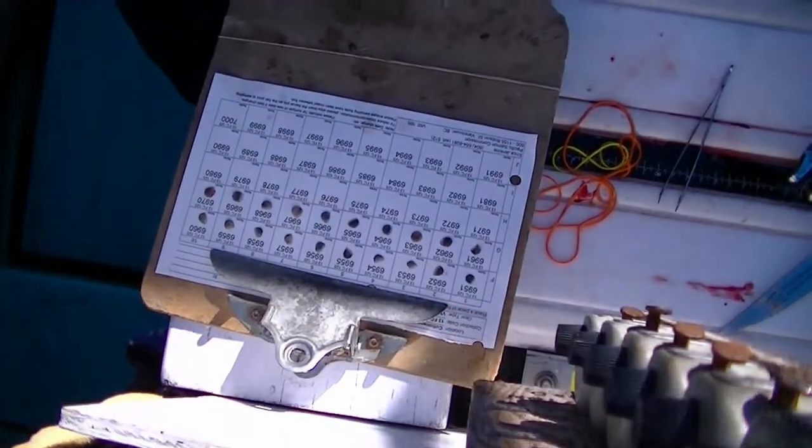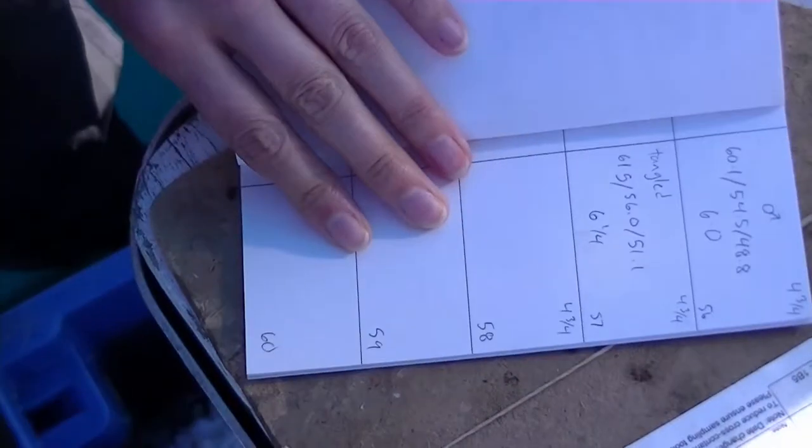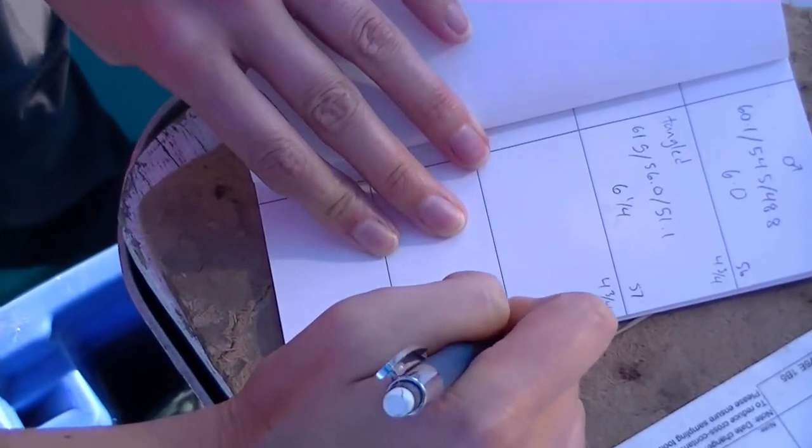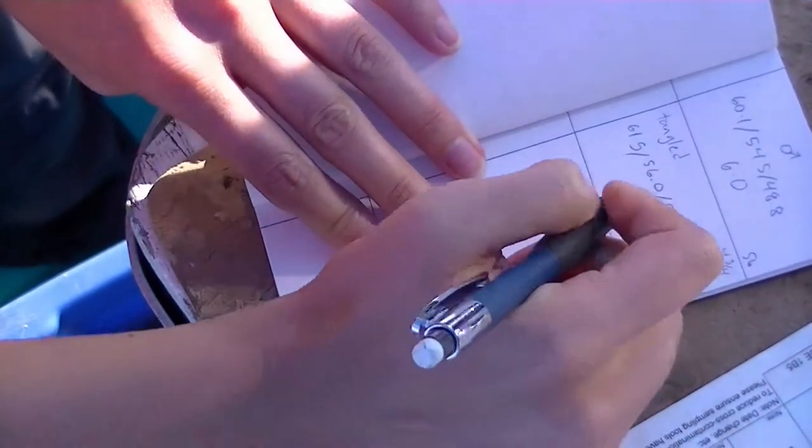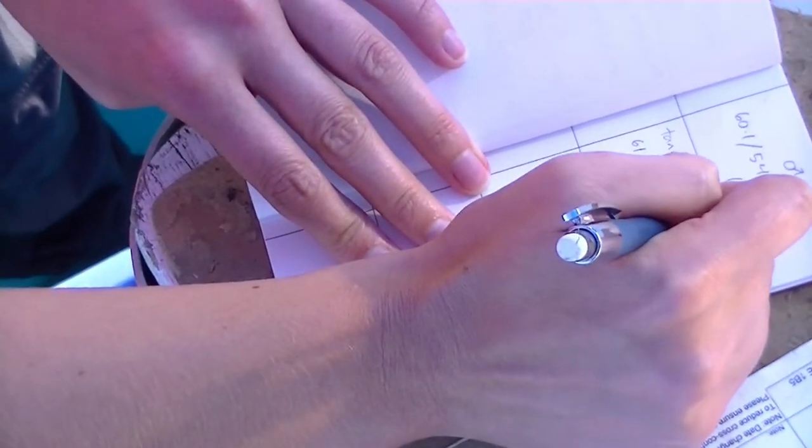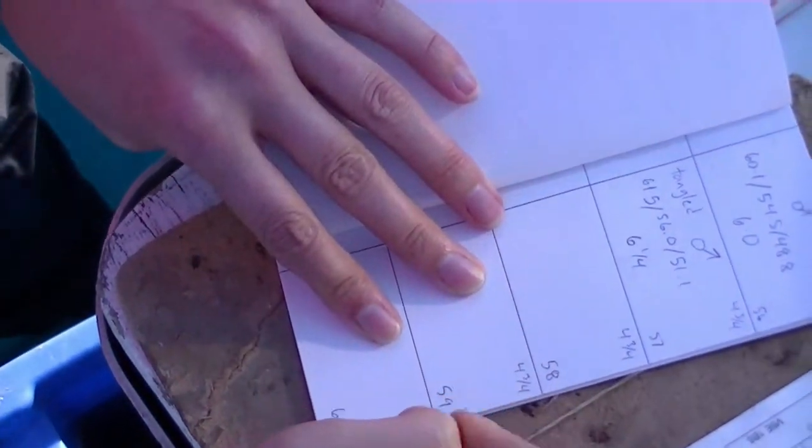The entire sampling process took less than a minute for this fish, though it may take longer without a helper to record information. The recorder has written down the length, sex, and weight, and the scale is placed in a pocket in a scale book next to the recorded data.